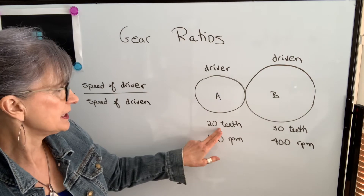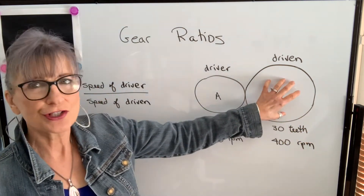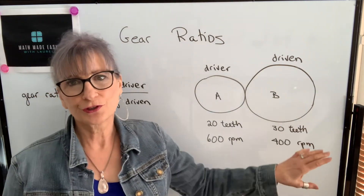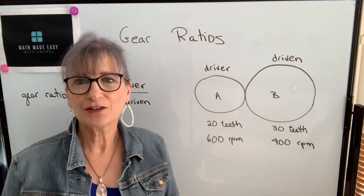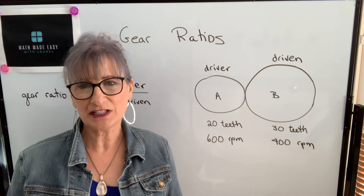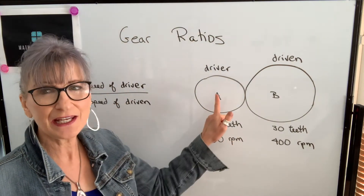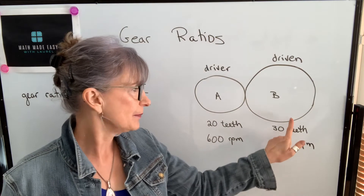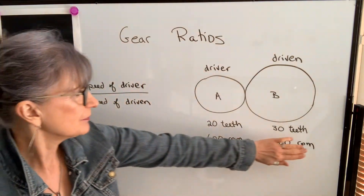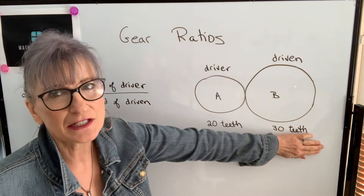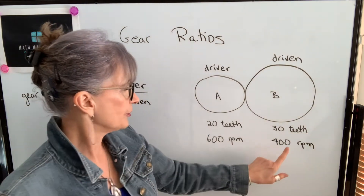We had gear A with 20 teeth and gear B with 30 teeth. We learned that the larger gear will turn slower. It's an inverse proportion, and the relationship for any inverse proportion is that the products will be equal. So the product of size times speed of A will equal the product of size times speed of B. We were able to find the speed by taking 20 times 600 and then dividing by 30.